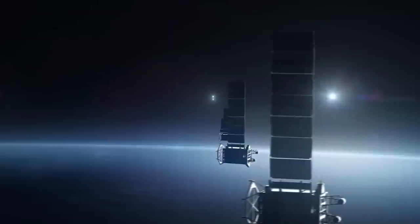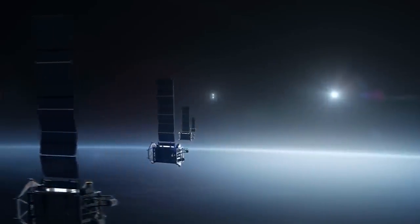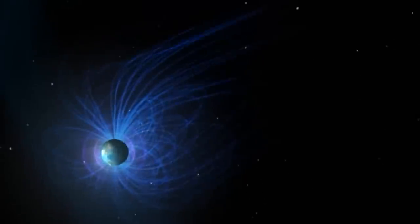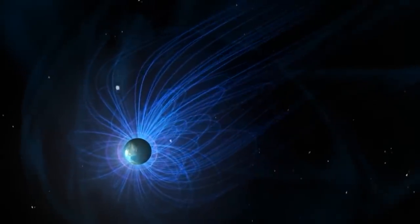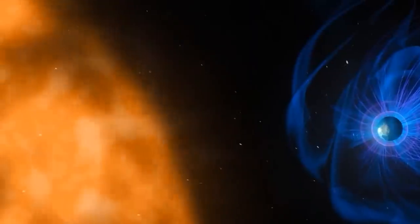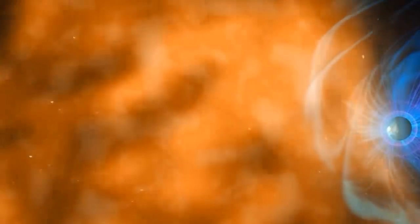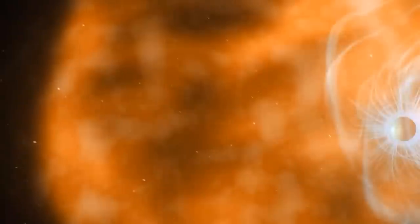Magnetic fields exert a force on moving charged particles, compelling them to spiral along these force lines. This action is incredibly beneficial because Earth constantly encounters high-speed charged particles, particularly those emitted by the Sun. Our magnetic field plays a vital role in deflecting the most harmful of these particles.